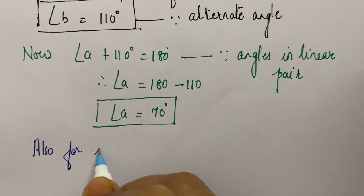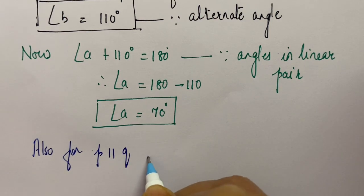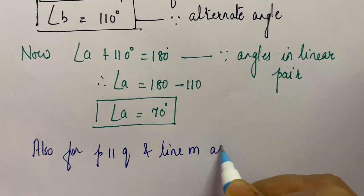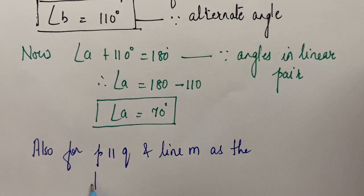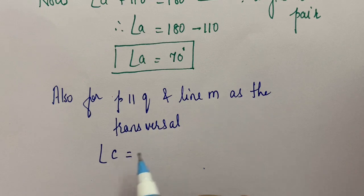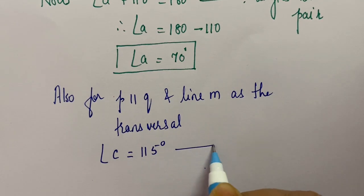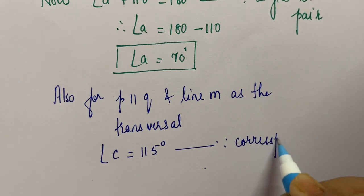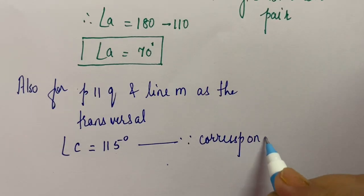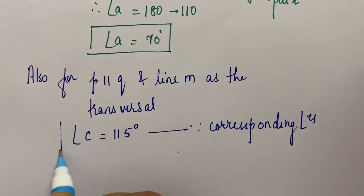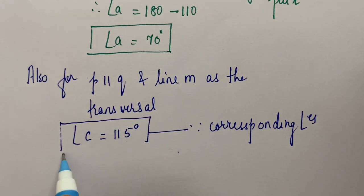For P parallel to Q and line M as the transversal, angle C is equal to 115°. Reason: corresponding angles.